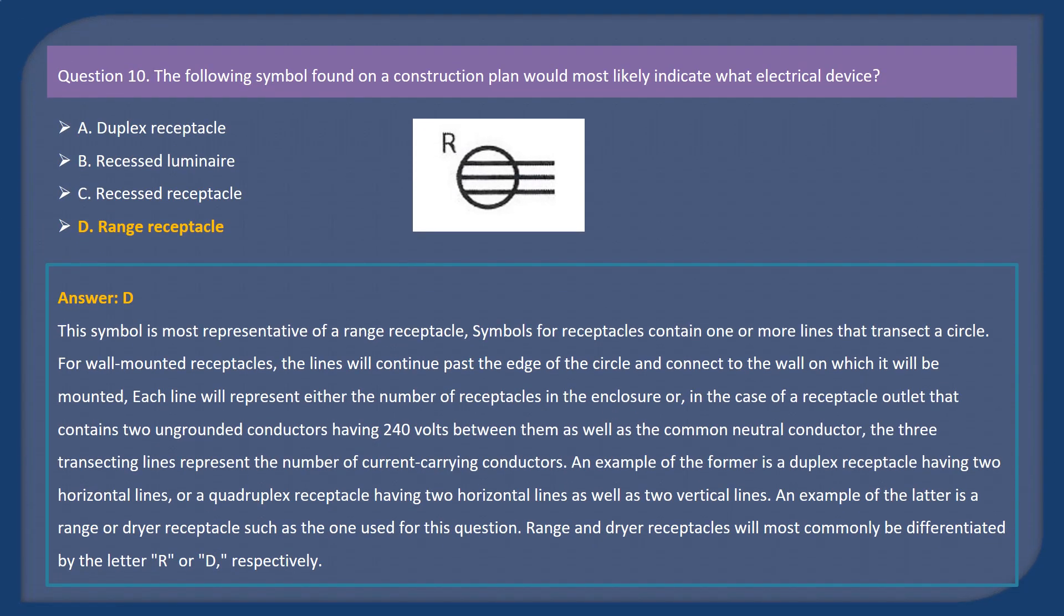Answer: D. Explanation. This symbol is most representative of a range receptacle. Symbols for receptacles contain one or more lines that transect a circle. For wall-mounted receptacles, the lines will continue past the edge of the circle and connect to the wall on which it will be mounted. Each line will represent either the number of receptacles in the enclosure or, in the case of a receptacle outlet that contains two ungrounded conductors having 240 volts between them as well as the common neutral conductor, the three transecting lines represent the number of current-carrying conductors. An example of the former is a duplex receptacle having two horizontal lines, or a quadruplex receptacle having two horizontal lines as well as two vertical lines. An example of the latter is a range or dryer receptacle such as the one used for this question. Range and dryer receptacles will most commonly be differentiated by the letter R or D, respectively.